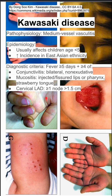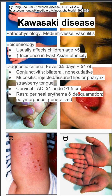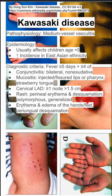Cervical lymphadenopathy — at least one node bigger than 1.5 centimeters. A rash: a perineal erythema and desquamation rash with polymorphous and generalized features. Erythema and edema of the hands and feet with periungual desquamation.